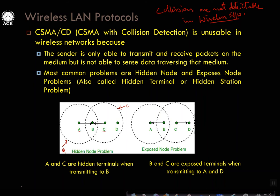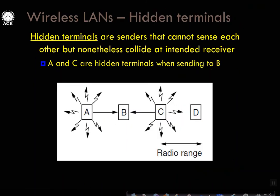Wireless networks in general will have two kinds of problems: hidden terminal and exposed terminal. A and C are not in communication range of each other, but A and B are, and C and B are. Both A and C, which are out of range of each other, try to sense for B, find B idle, and simultaneously transmit — that results in collision at the intended receiver B. So A and C are called hidden terminals.